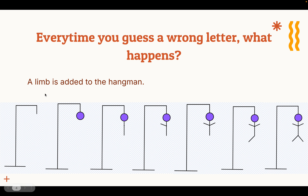So when you start off the game, the Hangman looks like this. When you guess one wrong letter, a head is added. When you guess another wrong letter, the body is added. When you guess another wrong letter, the left hand is added. When you guess another one, the right hand, then the left leg, and then the right leg. And when you get to this point, you've lost the game. You've used all your guesses. That is how the game of Hangman works and how we punish them for guessing a wrong letter.